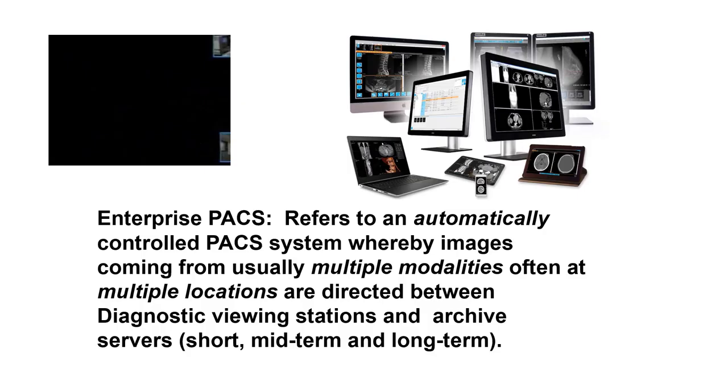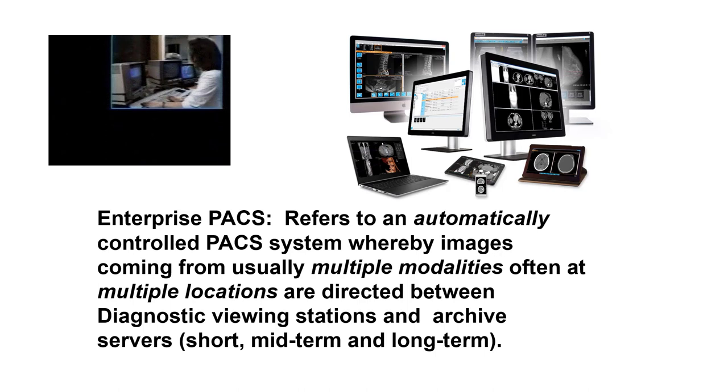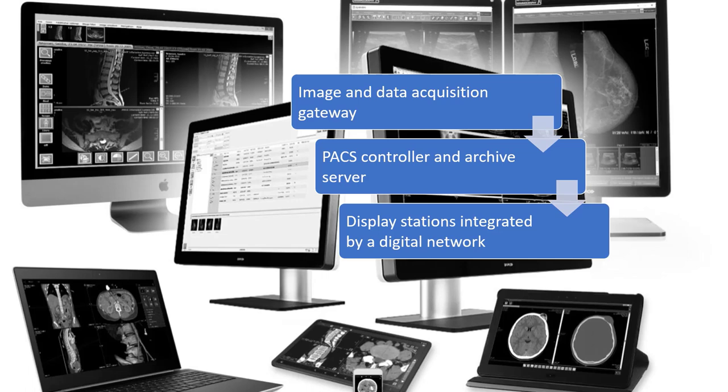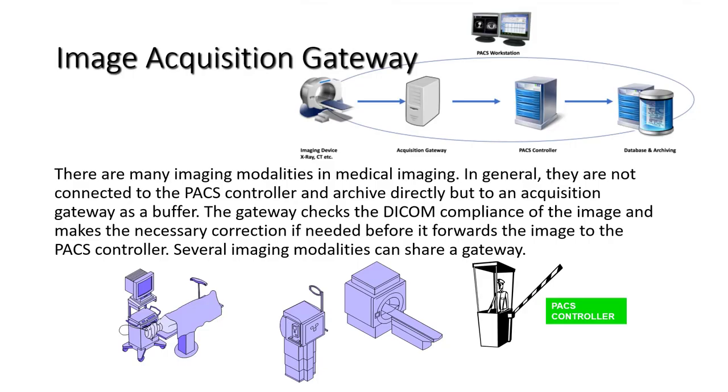Enterprise PACS refers to an automatically controlled PAC system whereby images coming from usually multiple modalities, often at multiple locations, are directed between diagnostic viewing stations and archive servers with short, midterm, and long storage. The image and data acquisition gateway sends the PACS controller and archive server information that can be displayed on integrated workstations by a digital network.